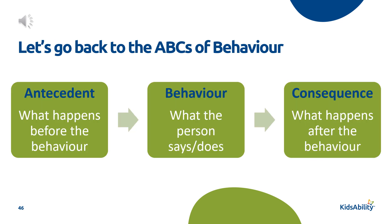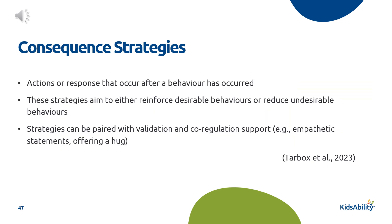Now let's look at consequence strategies — what happens after the behavior and what can we do to lessen the chances of the behavior happening in the future. Consequent strategies are things we do after the behavior has occurred. These strategies aim to either reinforce a different desired behavior or reduce the undesired behavior. Strategies can be paired with validation and co-regulation support — empathetic statements like 'I know that was really hard,' or offering a hug.